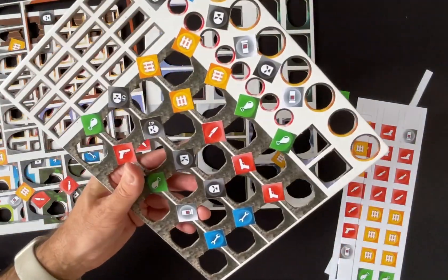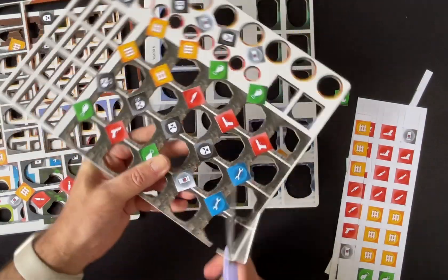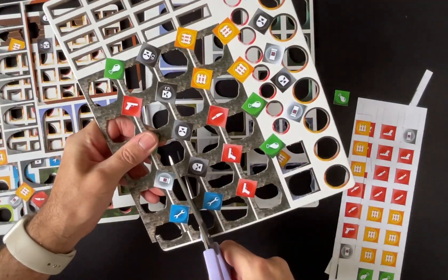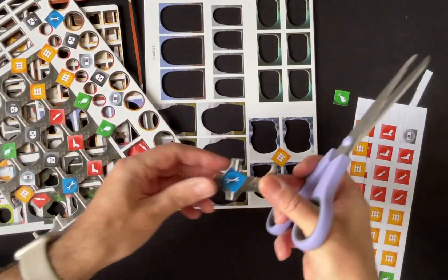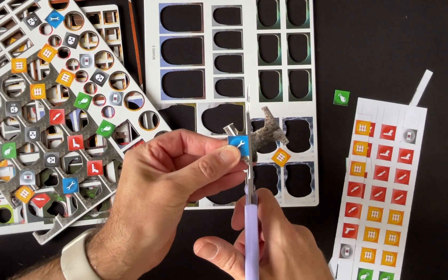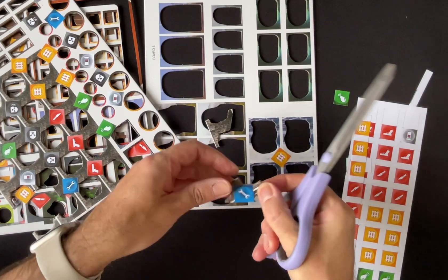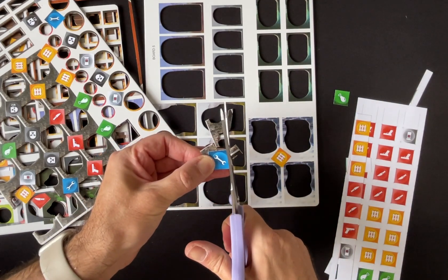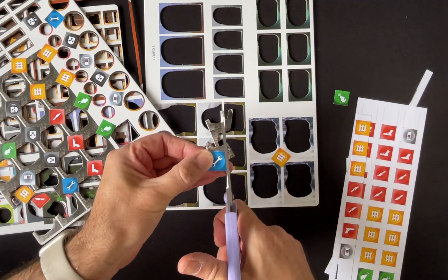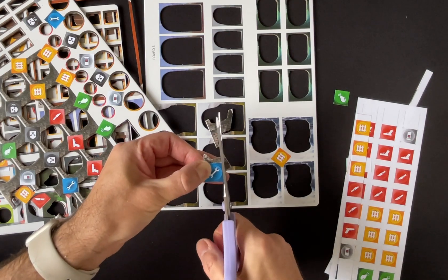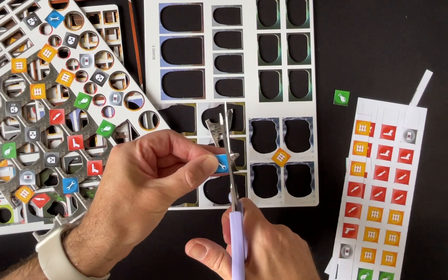And then it's just a matter of getting your scissors, maybe trimming it out a bit roughly, just to get your token out. And then it's just a matter of trimming it off. And you need a decent pair of scissors, but if you're doing print and play, hopefully you've got a decent pair of scissors anyway. And you just cut off your token.